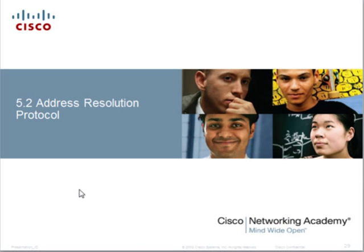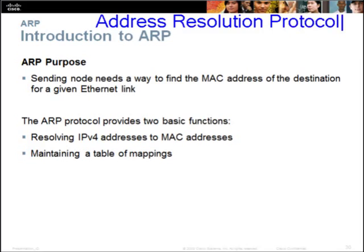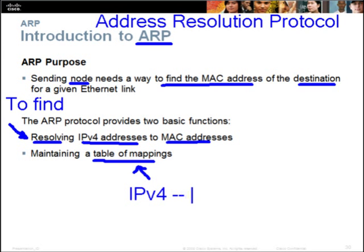Let's cover the next topic: the address resolution protocol (ARP). ARP is a method that allows a computer or node to find the MAC address of the destination. The ARP protocol provides two basic functions: resolving IPv4 addresses to MAC addresses, and maintaining a table that maps IPv4 addresses to MAC addresses.